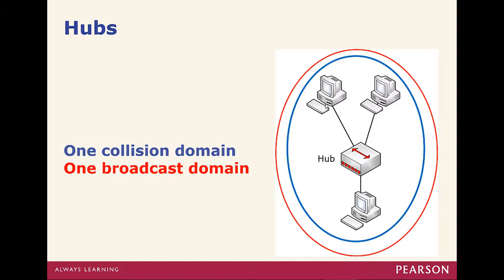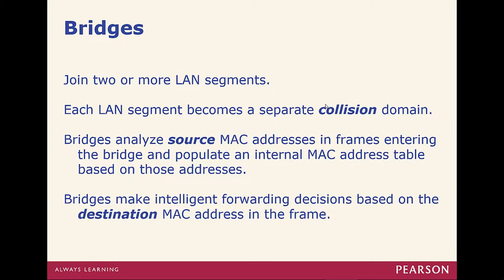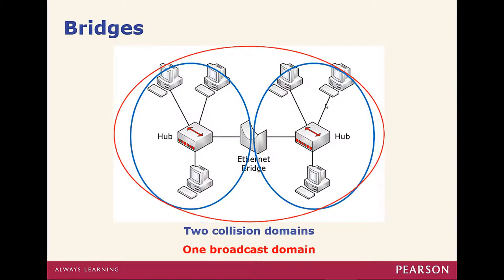Because hubs are just multiport repeaters, anything that goes to one port truly goes to all ports. Next, we have bridges. Bridges join two or more LAN segments together. Each LAN segment becomes a separate collision domain, and the bridge will analyze source MAC addresses and make forwarding decisions based off of that. A bridge operates at layer 2, so we still have a single broadcast domain, but the bridge will separate collision domains — it will not forward collisions.